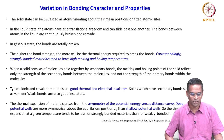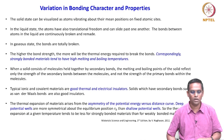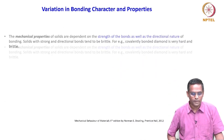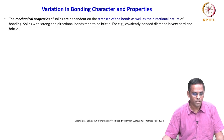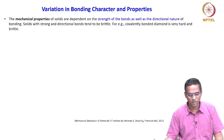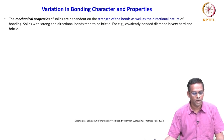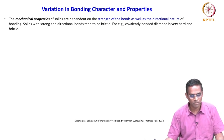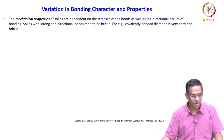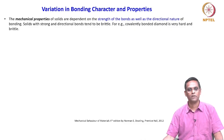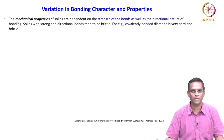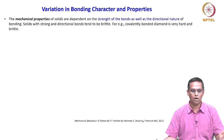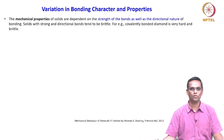These are some important salient features about bond character and properties. The mechanical properties of solids depend on bond strength as well as the directional nature of bonding. Solids with strong and directional bonds tend to be brittle — for example, covalently bonded diamond is very hard and brittle. Mechanical behavior is strongly dependent on bond type, nature, and directionality.